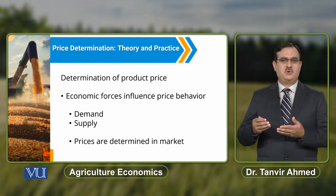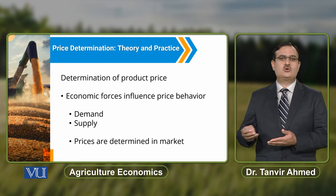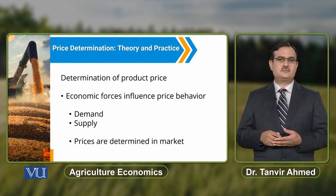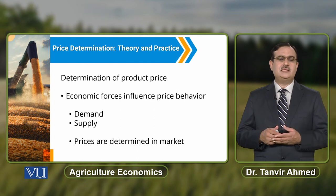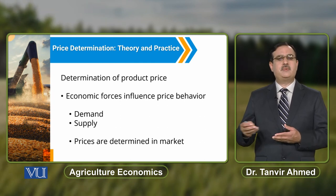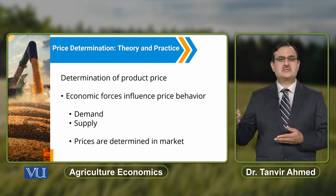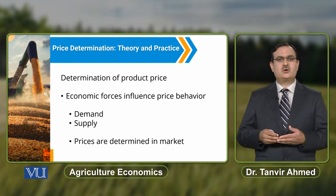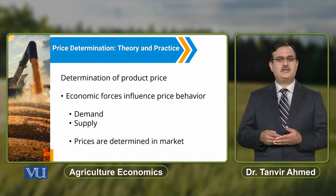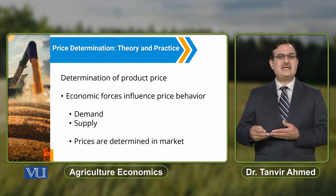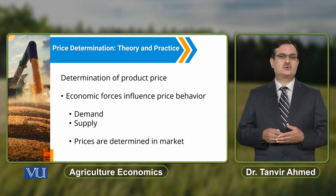Demand is basically the optimal combinations that consumers want to purchase. These are the combinations by using which consumers are maximizing their satisfaction. When we talk about supply, it refers to the optimal combinations that producers want to produce — those optimal combinations where the producer is minimizing his cost.